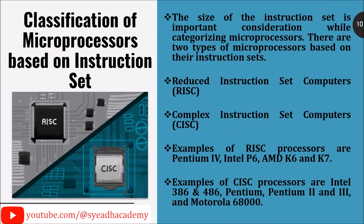Classification of microprocessors based on instruction set. The size of the instruction set is an important consideration while categorizing microprocessors. There are two types: 1. Reduced Instruction Set Computers (RISC), and 2. Complex Instruction Set Computers (CISC). Examples of RISC processors are Pentium 4, Intel P6, AMD K6 and K7. Examples of CISC processors are Intel 386 and 486, Pentium, Pentium 2 and 3, and Motorola 68000.